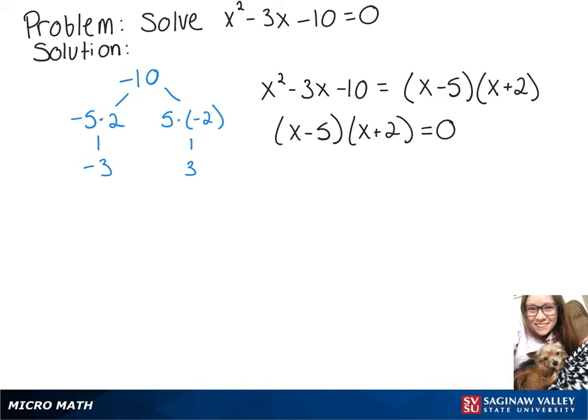To solve this, we're going to separate those two and write x - 5 = 0 or x + 2 = 0.